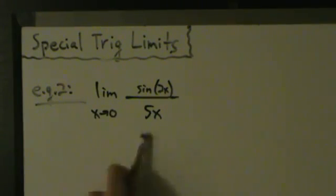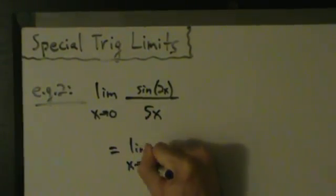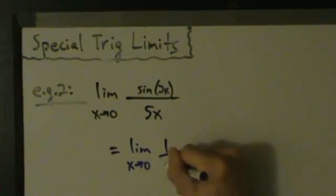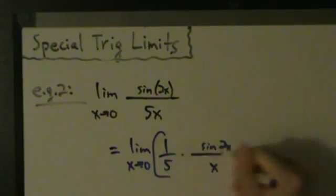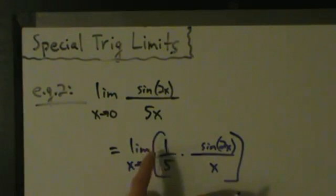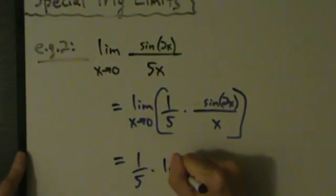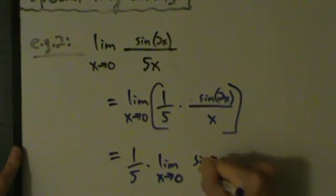The 5 in the denominator isn't causing much trouble. Having 5x on the bottom is really like saying 1/5 times sine of 2x over x. The 1/5 is just a constant, so we can pull it out: we get 1/5 times the limit as x approaches 0 of sine of 2x divided by x.